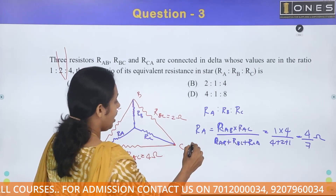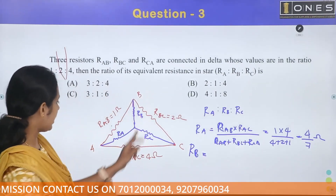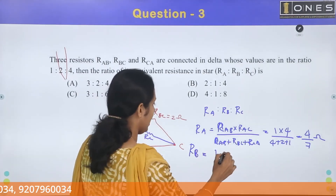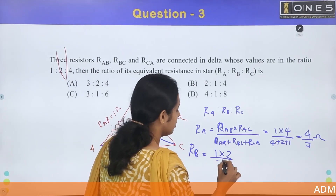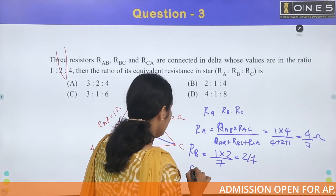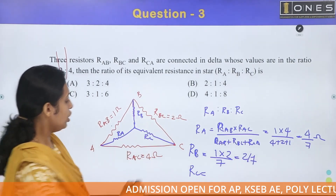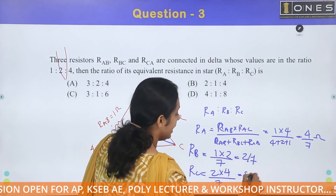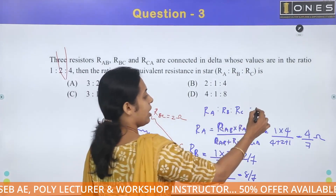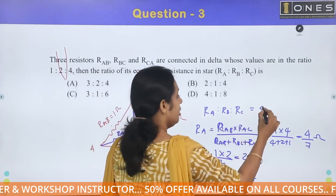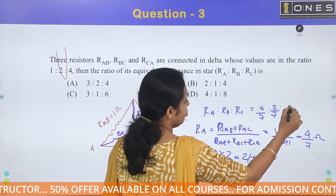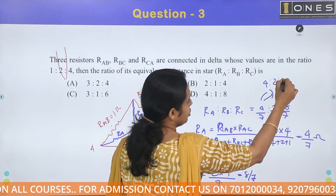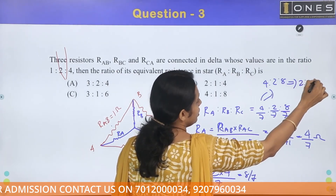RB equals RAB × RBC divided by total resistance, which is 1 × 2 divided by 7, giving RB = 2/7 ohm. RC equals RBC × RCA divided by total resistance, which is 2 × 4 divided by 7, giving RC = 8/7 ohm. So the ratio RA:RB:RC is 4/7 : 2/7 : 8/7, which simplifies to 2:1:4.